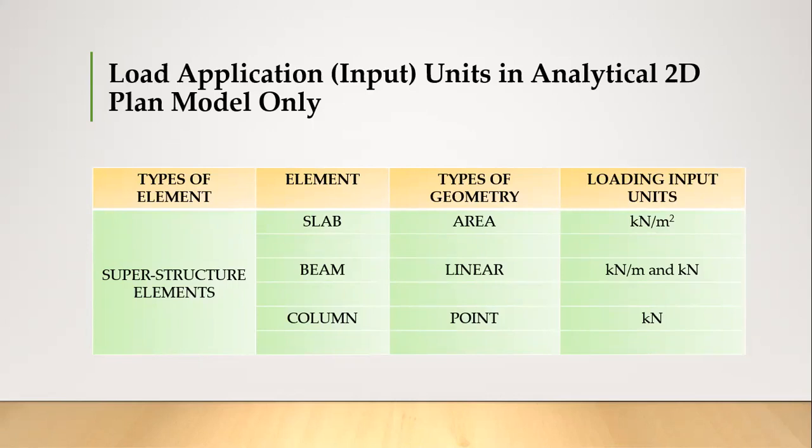If that load is uniformly distributed. Otherwise that load can be applied as a point load. Like if a secondary beam is resting on a primary beam, the reaction from the secondary beam will act as a point load on the main beam. That time the load input unit will be kilonewton. Therefore these are two possibilities: kilonewton per meter and kilonewton.